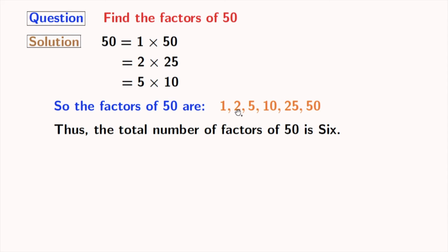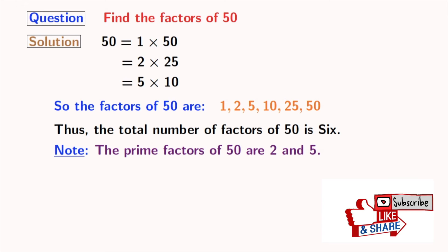Because these two numbers do not have any divisor other than 1 and that number itself. So, we can say that the prime factors of 50 are 2 and 5. Now, let's learn about the prime factorization of 50.